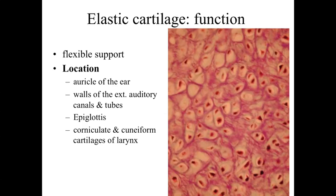Elastic cartilage provides much more flexible support than hyaline cartilage. Hyaline cartilage is found in areas like the fetal skeleton, articular joints, and the cartilaginous rings of the trachea. It provides strong support but is not very flexible — you can't twist it around much, so it's more rigid than elastic cartilage.